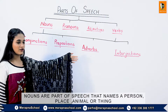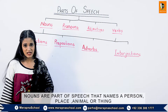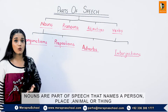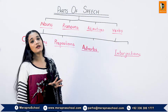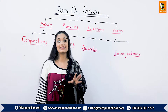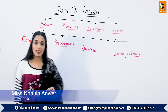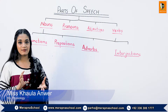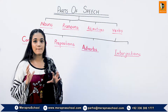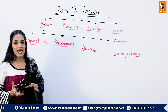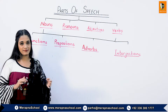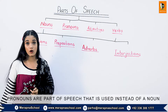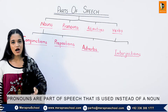The eight parts of speech are: nouns, pronouns, adjectives, verbs, conjunctions, prepositions, adverbs, and interjections. We will first discuss nouns. Nouns are also known as naming words — the words that show the names of a person, place, animal, or thing.